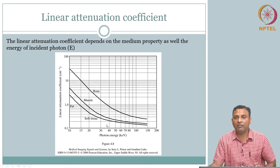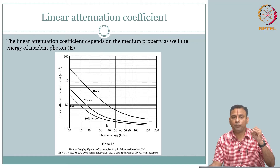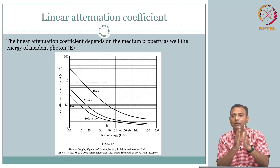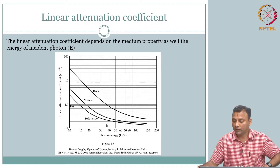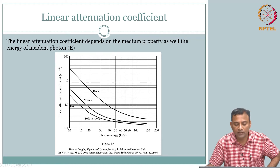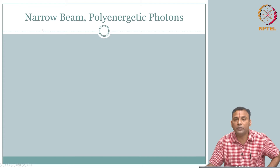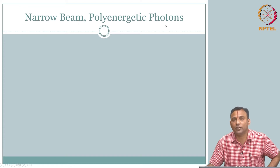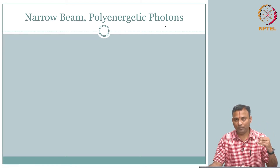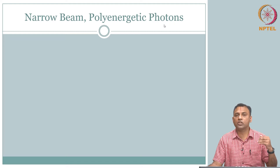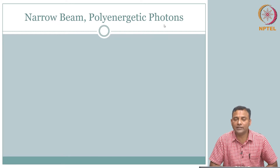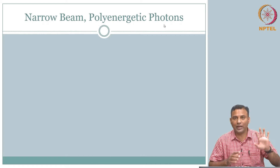In reality, we covered the narrow beam mono-energetic case with homogeneous and inhomogeneous slabs. Now we need to update our equations to account for poly-energetic photons. What is the x-ray tube producing? Bremsstrahlung — so you get a spectrum S(E): different numbers of photons, each at a different energy level. That is what you are actually sending in.